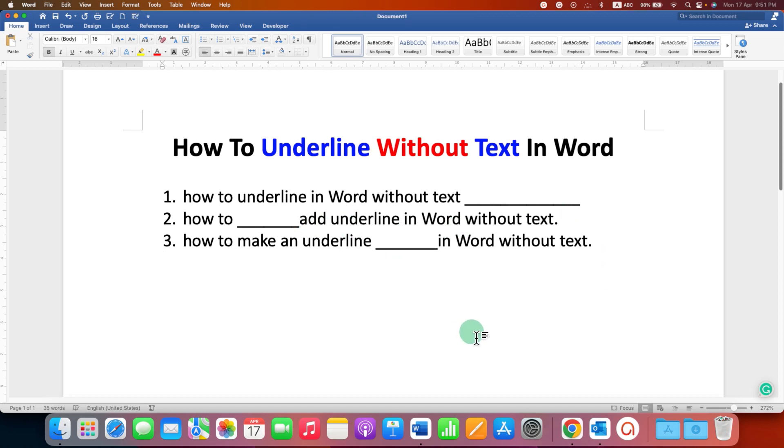There are two quick methods. In the first method, type what you want first and after typing, click inside the line where you want underlined and press space bar multiple times to get the blank space.